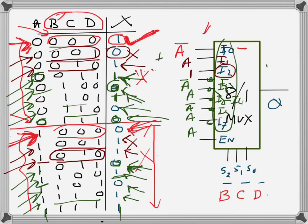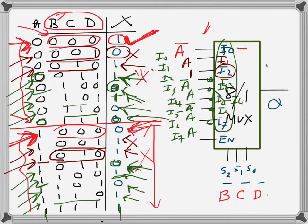To summarize: the inputs are i0 through i7. The procedure is to divide the truth table into two halves and observe the relationship between A and the output for each BCD combination. The mux input is connected to A if the output follows A, to A-bar if it's inverted, to 1 if the output is always 1, or to 0 if the output is always 0. It's a bit clumsy but I hope it's understandable.